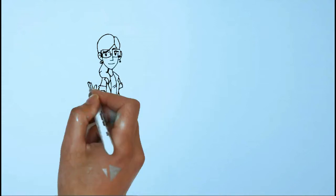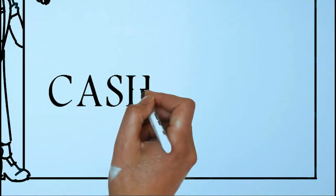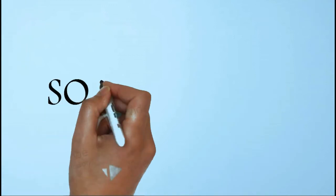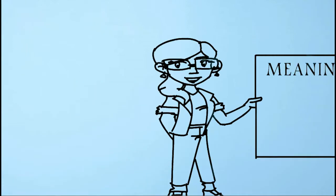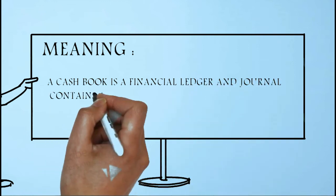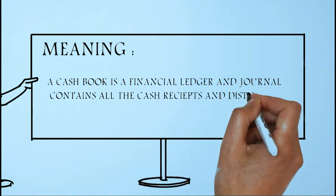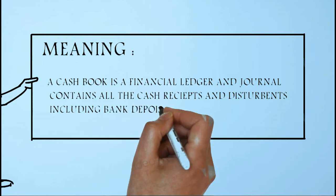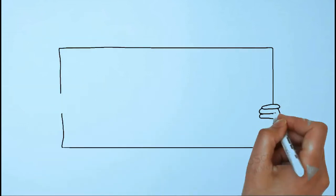Good morning, my respective teachers. Our topic is cash book, so what does it mean? Let's understand. A cash book is a financial ledger and journal that contains all cash receipts and disbursements, including bank deposits and withdrawals.